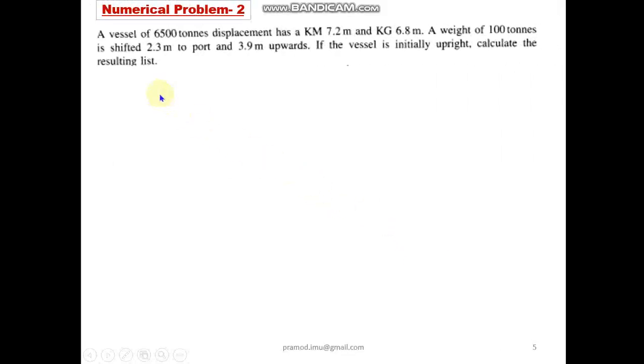Now another question. A vessel of 6,500 tons displacement has KM 7.2 meter, KG 6.8 meter. A weight of 100 tons is shifted 2.3 meters to port and then 3.9 meters upwards. If the vessel is initially upright, calculate the resulting list. So this is a very common scenario on ships.